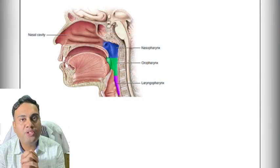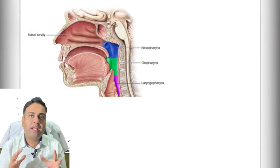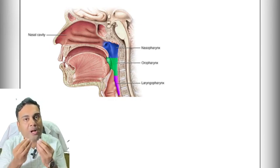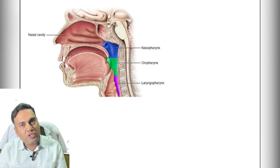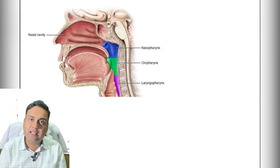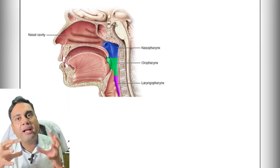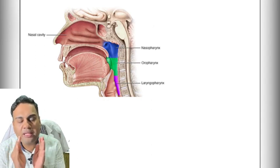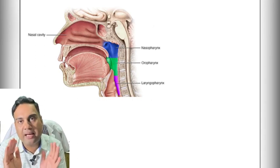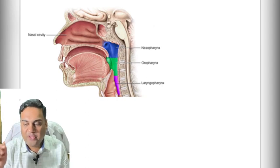Today we are going to start a new system — the pharynx. Pharynx plays a very important role in our body because it is the common pathway for both food and air. We eat with the pharynx and breathe with the pharynx and lungs. That is why pharynx is the crux of the matter of the entire throat. It is not a very difficult topic, so we are going to cover it in just two lectures.